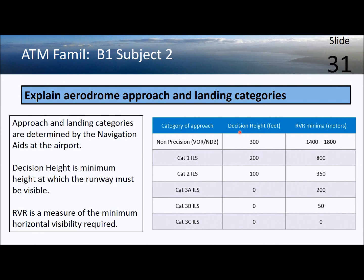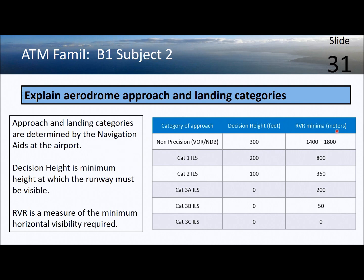If you get below 300 feet and can't see the runway, you have to abort the landing. There is also a figure for RVR minima — runway visual range — which is a measure of horizontal visibility. For a non-precision approach, that equates to 1.4 to 1.8 kilometers of required forward visibility.